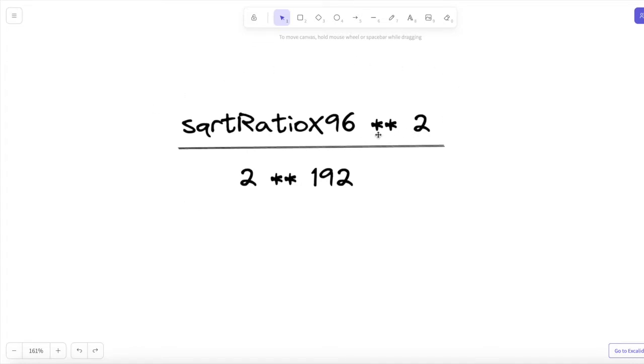I've changed the notation here, but this is still square root ratio x96 multiplied by itself. I'm just saying to the power of 2 here, which means the same thing.